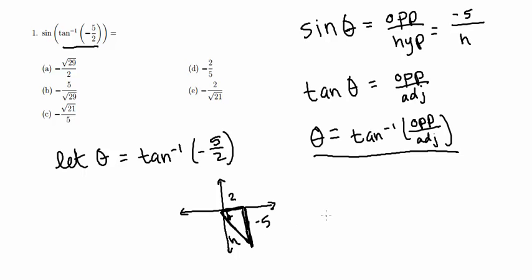So now what we're going to do is we're going to use the Pythagorean theorem to solve for h. So doing that, we're going to do a squared plus b squared equals c squared. So we're going to get 2 squared plus negative 5 squared equals h squared. 2 squared is 4. Negative 5 squared is 25. This is going to equal h squared. 29 equals h squared. When we take the square root of both sides, we're going to get h is equal to root 29.